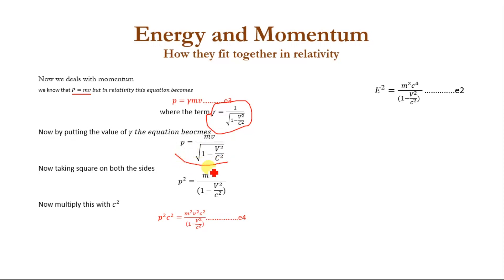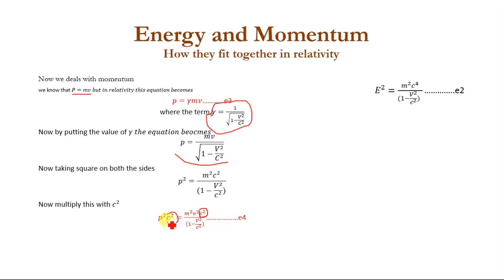Now squaring both sides, the equation becomes P² = m²v² / (1 - v²/c²). Now multiplying both sides by c², the equation becomes P²c² = m²v²c² / (1 - v²/c²). We name this equation number 4.